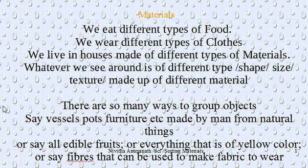There are so many ways to group objects because they are of different materials. Vessels, pots, and furniture are made by man from natural things. From trees we get wood, and from wood we make furniture. From soil we get mud, and from mud we make pots. From the earth we extract minerals, from minerals we get metal, and from metal we make vessels — for example, copper or aluminium vessels. From plants we get fruits, and from fruits we make fruit juice or fruit salad.